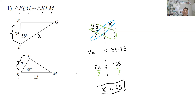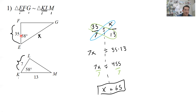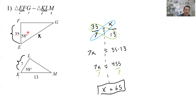One thing to note when you're setting up these proportions: since I had 35 over 7 with this triangle on top of my first ratio, I need to keep the other side length from that same triangle on top - so it needs to be X over 13. If you switch it up, you won't get the right answer. It doesn't matter which triangle you pick to go on top, but as soon as you set up your first ratio, the side lengths from one triangle on top needs to stay on top for all the ratios going forward.